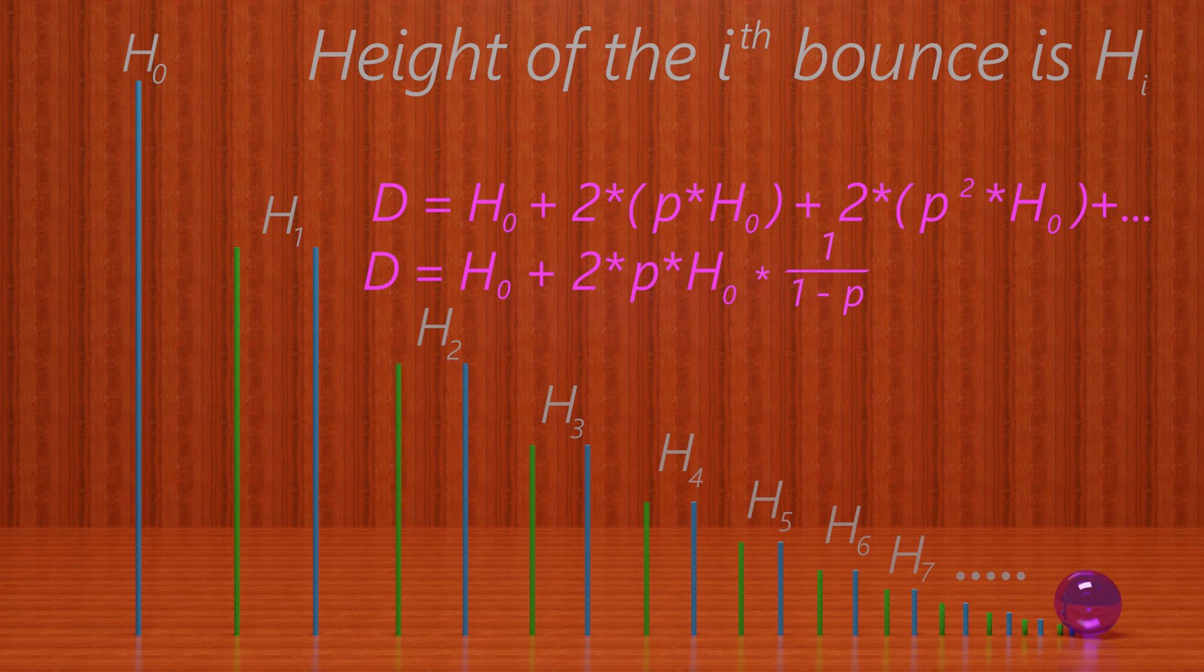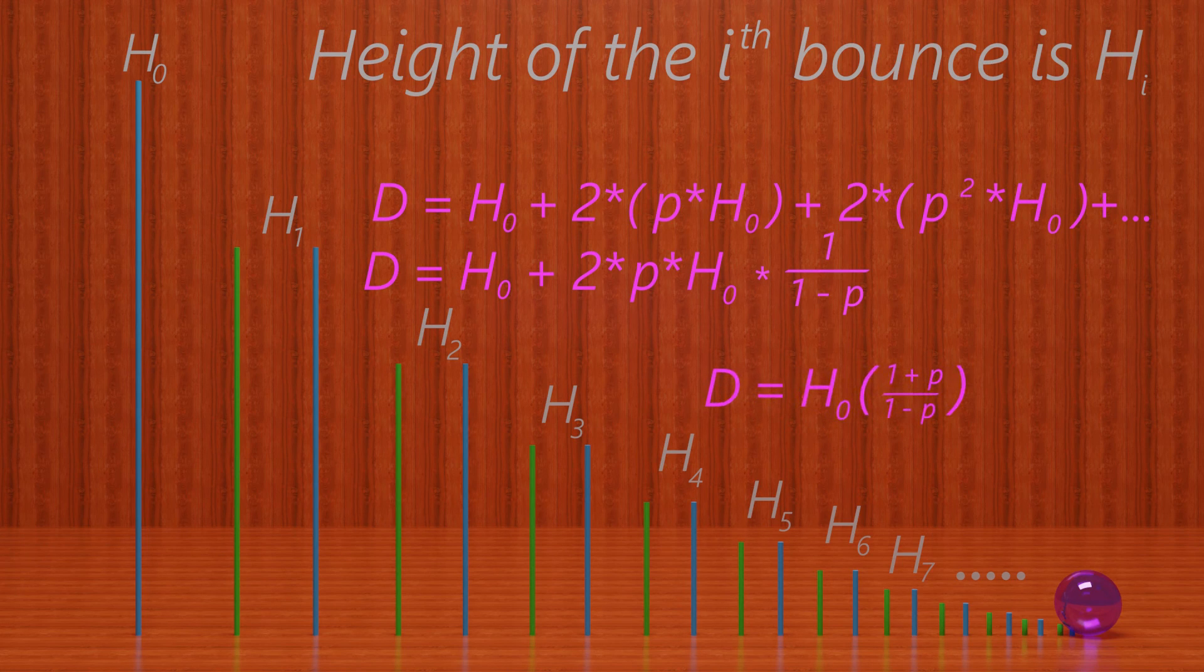Simplifying this down, we get that that is equal to H0 times 1 plus p over 1 minus p, which is our distance.